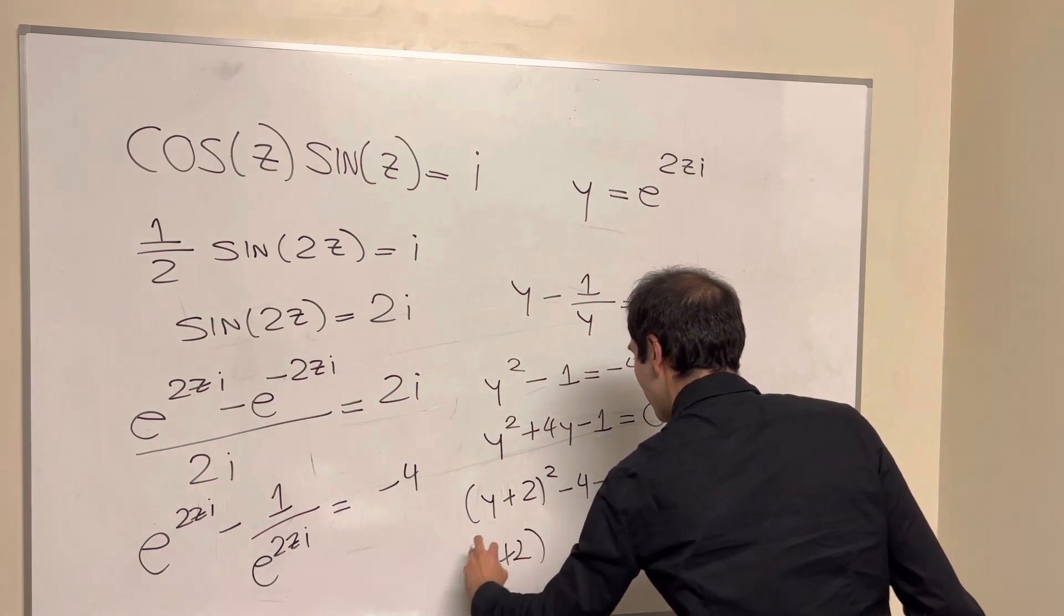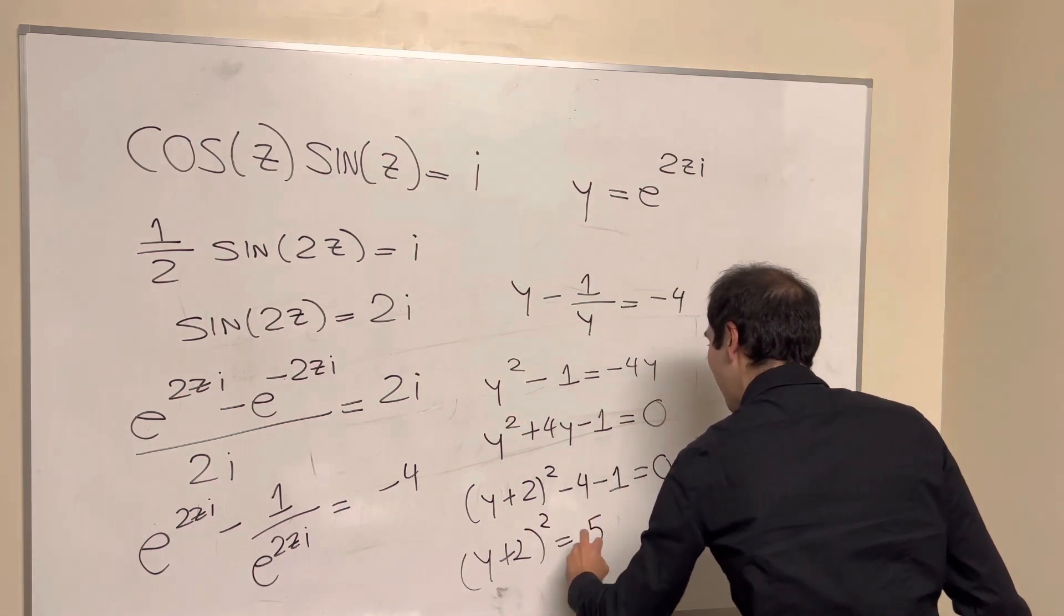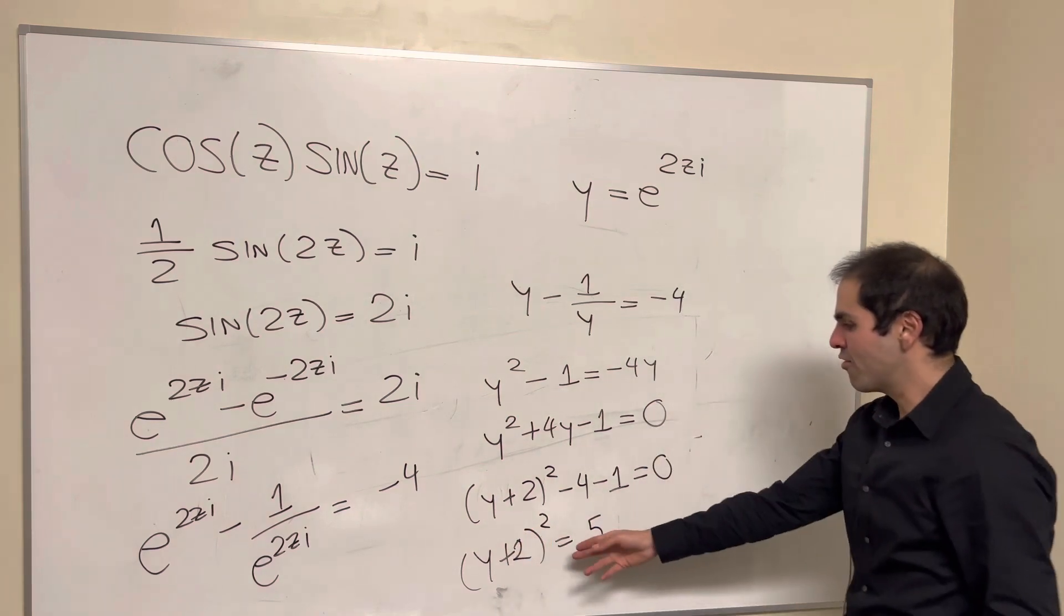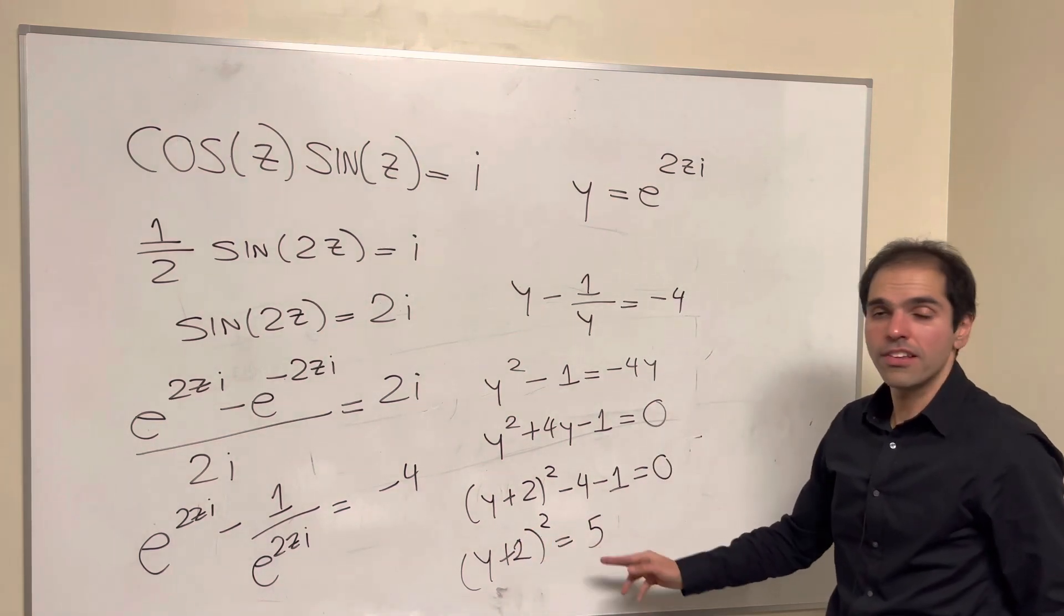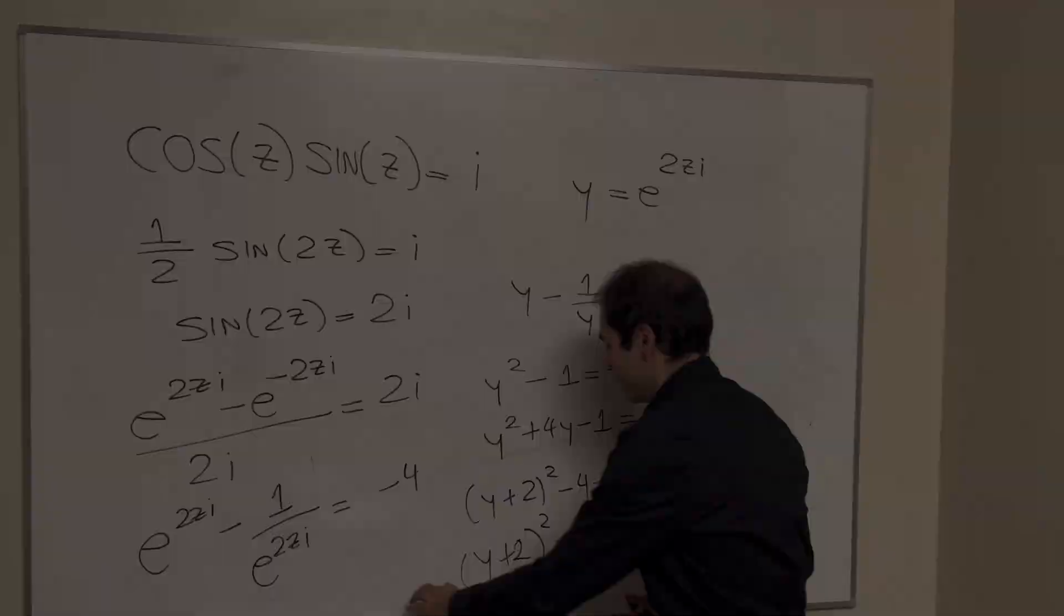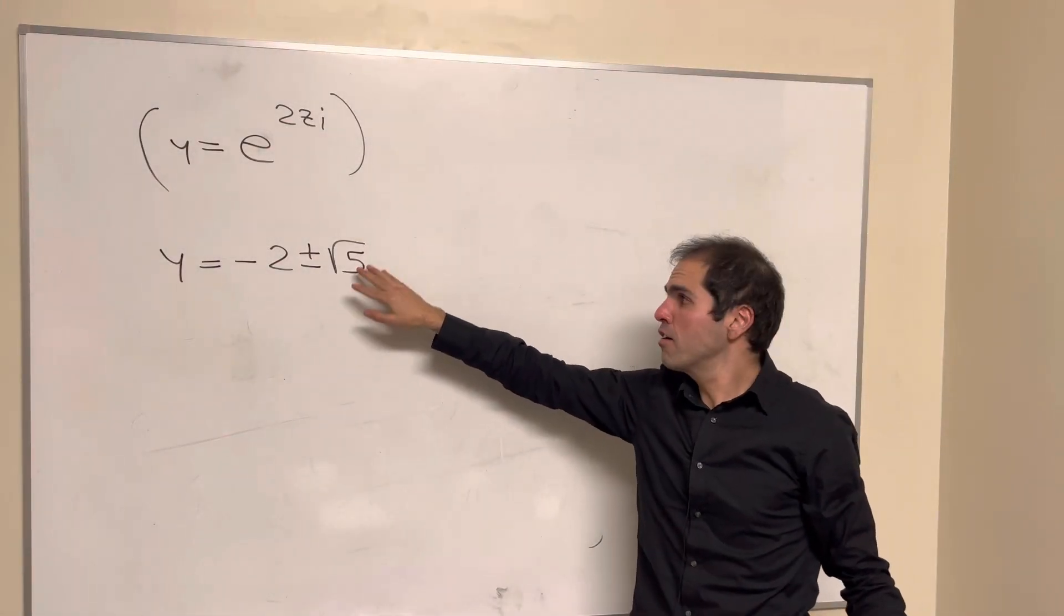So y plus 2 squared equals 5, and therefore, y is minus 2 plus or minus square root of 5. And here we just have to be a little bit careful, depending on whether we choose plus square root of 5 or minus square root of 5.